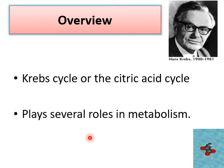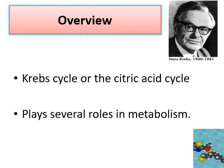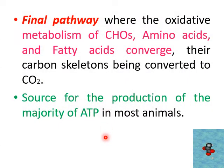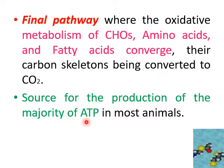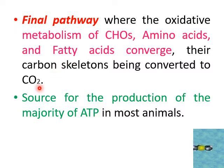The Krebs cycle is considered the most fundamental pathway in energy metabolism and serves multiple roles. It is the final metabolic pathway where the metabolism of carbohydrates, proteins, and fatty acids converge. It produces the majority of energy currency in most animals, converting all foodstuff into ATP along with water and carbon dioxide.